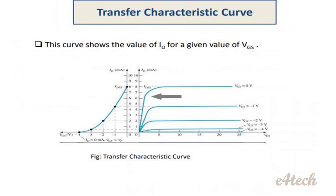Transfer characteristics: it is the graph showing the relation between drain current and gate-source voltage. In this graph, VGS is on the x-axis and drain current ID is on the y-axis. It shows the corresponding ID for each VGS value.